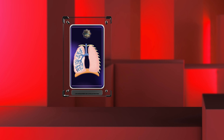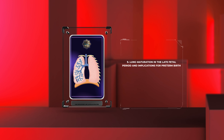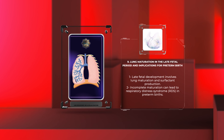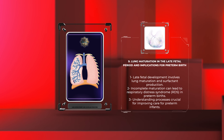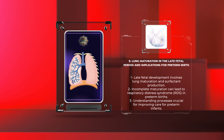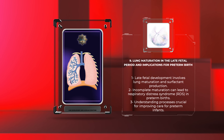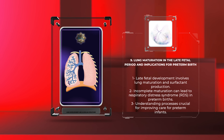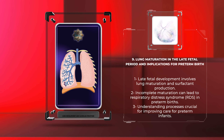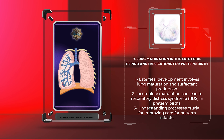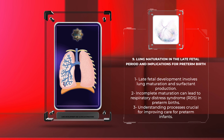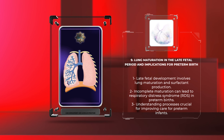During late fetal development, the lungs undergo critical maturation, involving the production of surfactants that reduce alveolar surface tension. In preterm births, incomplete lung maturation can lead to respiratory distress syndrome. Understanding these processes is crucial for improving care for preterm infants.